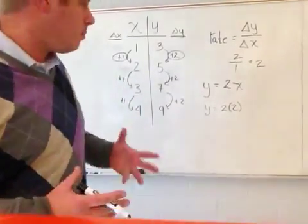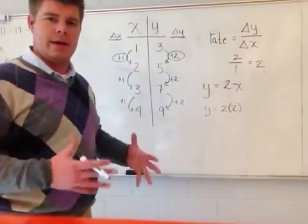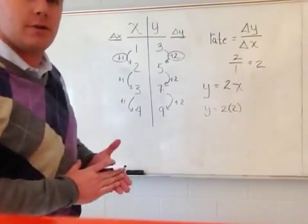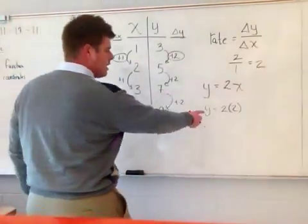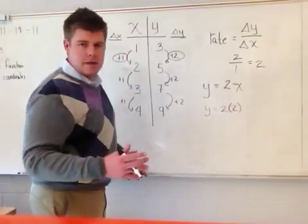So what I'm going to do is I'm going to come up here and plug 2 in. So I say y is equal to 2 times 2. Again, because by this rate of change, my thing is constantly going to be multiplied by an increment of 2. So I get 2 times 2. Well, 2 times 2 is 4.